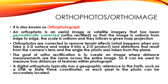The goal of ortho rectification is to create an image where distance measurements are the same across the entire image, so that it can be used to measure the true distance of features within the photograph. A digital orthophoto typically has a geographical reference to the Earth, such as UTM or state plane coordinates, so that each pixel in the photo can be accurately located.